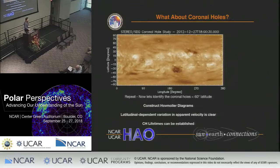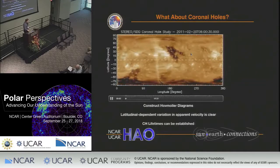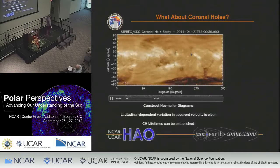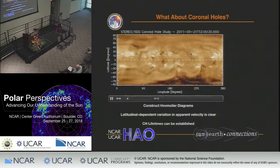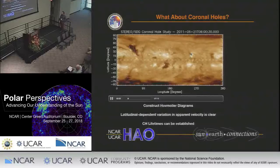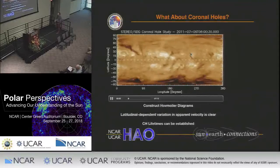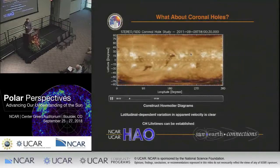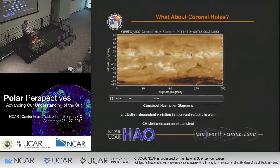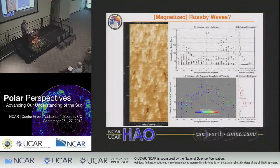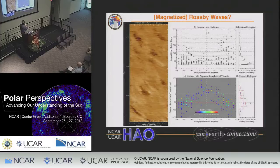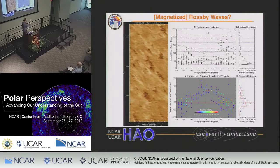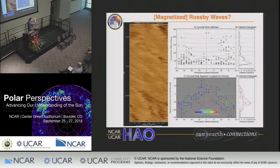What about coronal holes? We heard a little bit about coronal holes yesterday. Yet again, another beautiful movie stitched together from STEREO and SDO. Not enough people are looking at this data. You do the same thing — you build Hovmöller diagrams for the corona and look at the latitudinal dependence. Now you're trying to identify these dark patches — these coronal holes — and how they vary as a function of latitude.